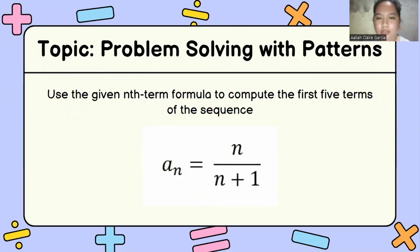It's a given nth-term formula to compute the first five terms of the sequence. The formula given was a sub n is equal to n over n plus 1. In order to get the first five terms of the sequence,